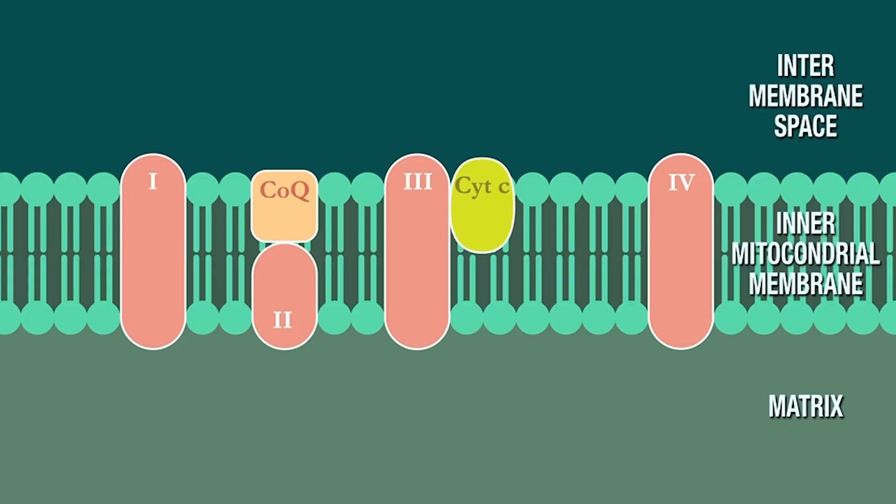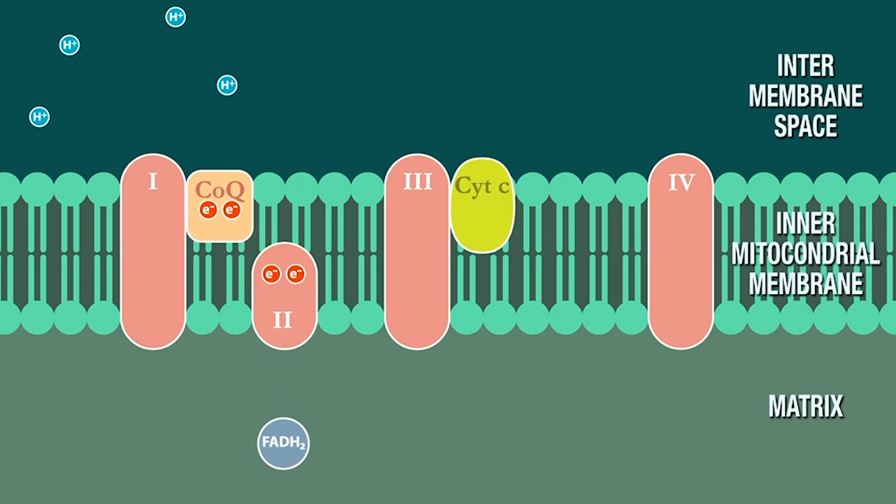In the electron transport chain, which is literally a chain of electron transport, we have to get electrons from one end of the factory as a raw material through each step of the way until we get to the last step, which is ultimately energy production. There are a few spots considered stationary and a few considered mobile. The mobile carriers are responsible for picking up electrons from one complex and delivering them to the next, repeating that cycle to move electrons down the chain.